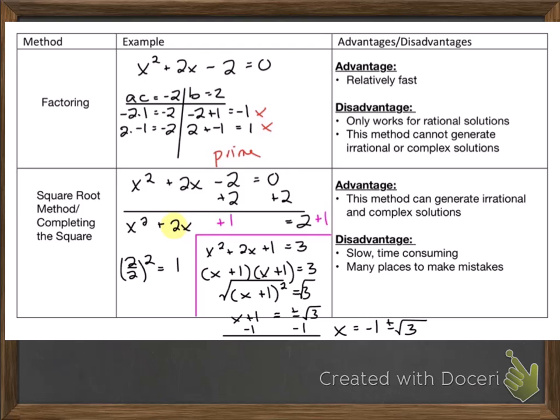Then we have our square root method, or completing the square. So I've done that here, and you can see that we do have a real solution. However, it is an irrational solution because it contains plus or minus the square root of 3. So again, the advantage is that this method can generate irrational solutions, as you can see here, and of course complex solutions if needed.